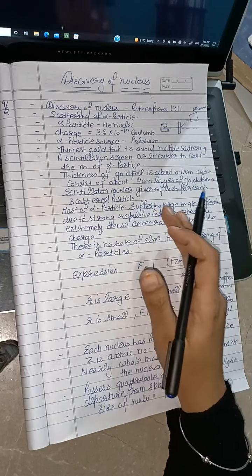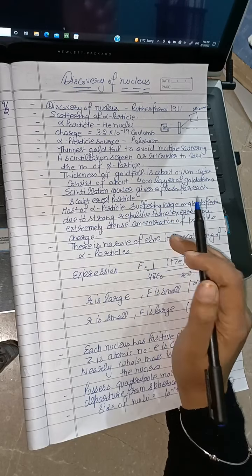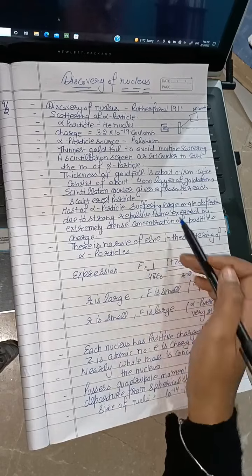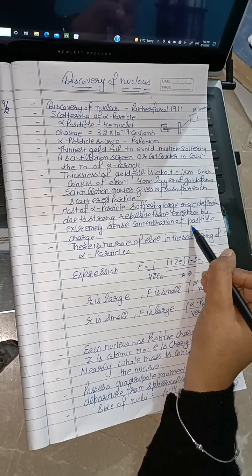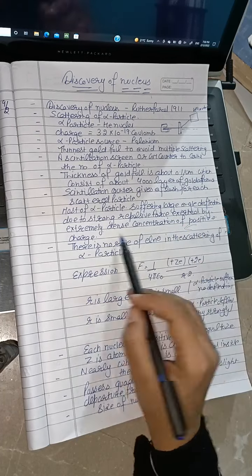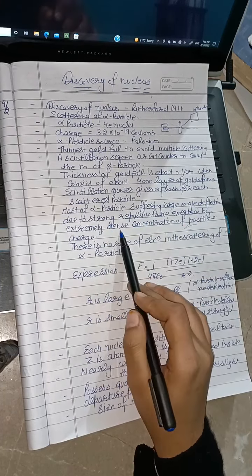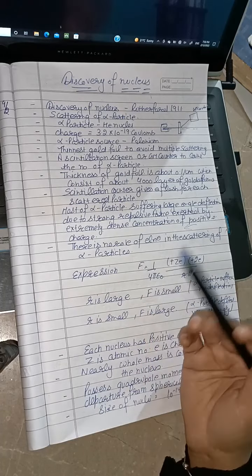We know repulsion occurs when charges are the same. The alpha particles showed strong deflection and some came back, indicating an extremely dense concentration of positive charge, which led to Rutherford's concept of the nucleus.